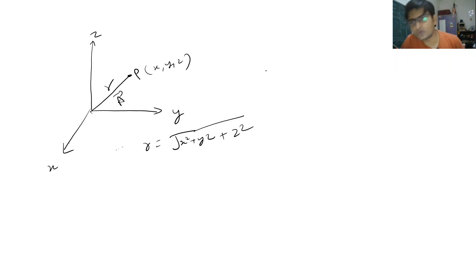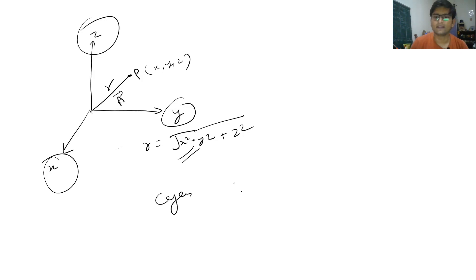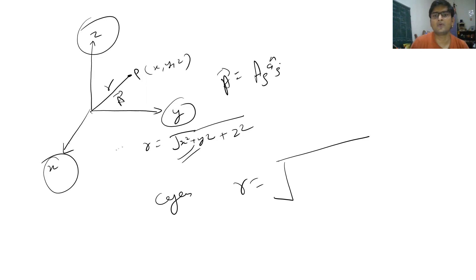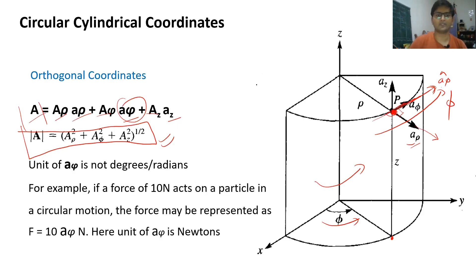In the cylindrical case, if a vector is A = A_rho·a_rho + A_phi·a_phi + A_z·a_z, then its magnitude r equals the square root of A_rho² + A_phi² + A_z². This is the same formula as in Cartesian, because whatever orthogonal coordinate system you use, if the coordinates are perpendicular to each other, this formula remains the same.